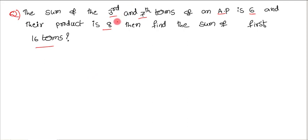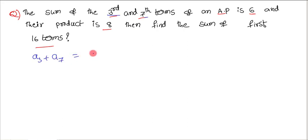Let us write what is given. We have given that the sum of the third term and seventh term — that is a3 + a7 — is equal to 6. And the product a3 × a7 is 8. Using this, we need to find out the sum of the first 16 terms, that means S16.